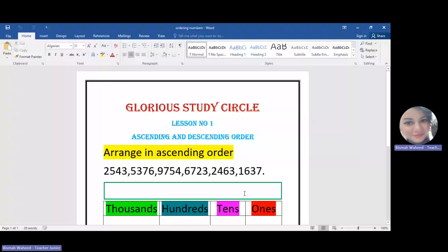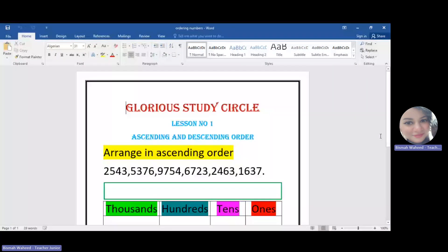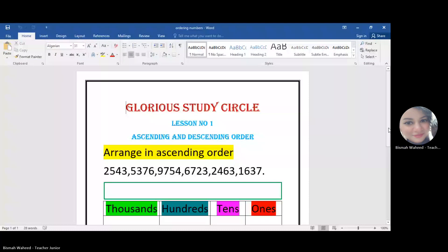Ordering number means how we can order numbers from bigger to smaller or smaller to bigger. The easiest way to order the number is by looking towards their place value.